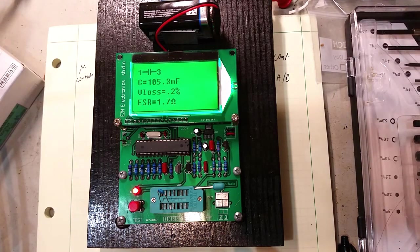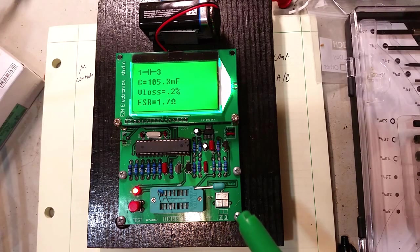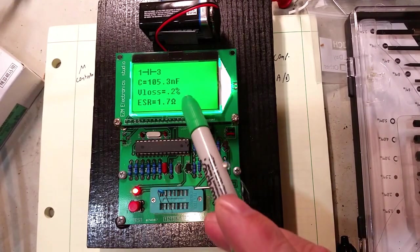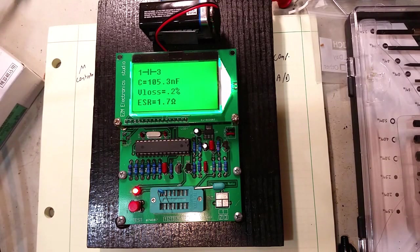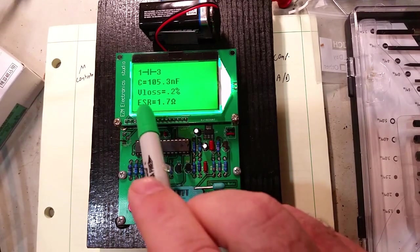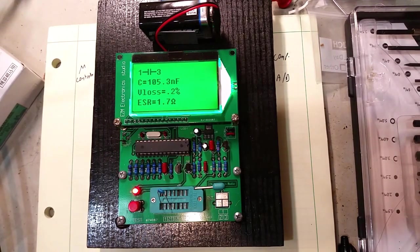The GM328 goes through some self-test and startup and then it tells us that this is 105 nanofarads, which is basically 0.1 microfarads. It gives us some other information about the loss in the capacitor and the ESR, which are more complex topics also. So how does it measure? How did it get to that 0.1 microfarads?